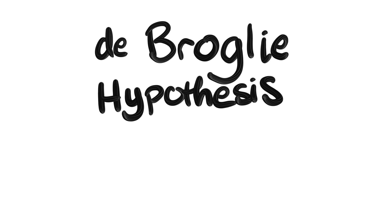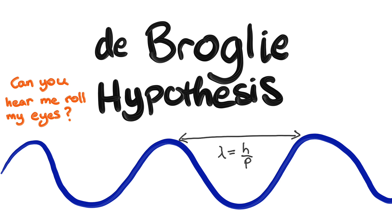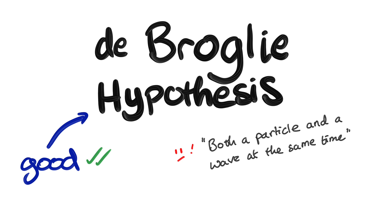This video is about the de Broglie hypothesis, which supposedly says matter is a wave as well as a particle, and this equation that tells us how to find the wavelength of that particle. The issue is, there is a very precise way to interpret the hypothesis that leads to interesting questions about quantum mechanics, but instead it's often stated in an almost meaninglessly imprecise form. Let's fix that.